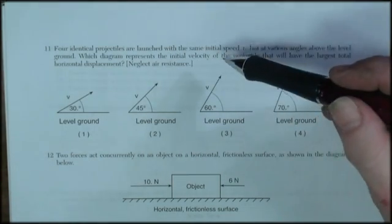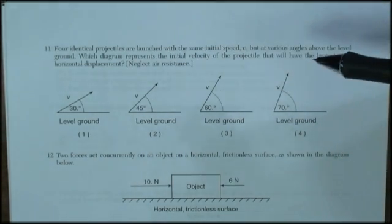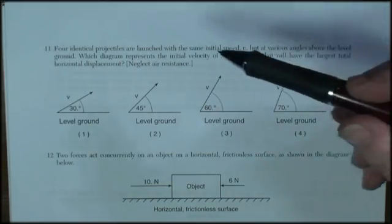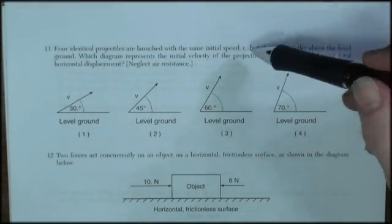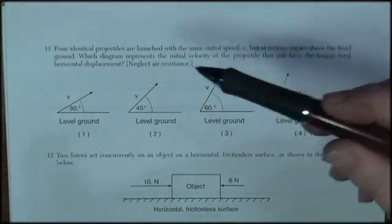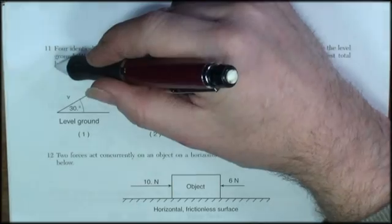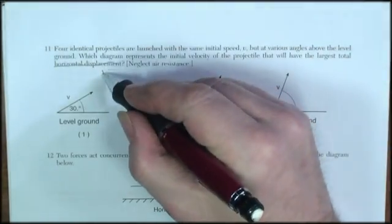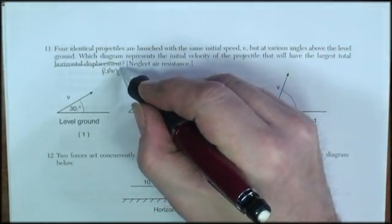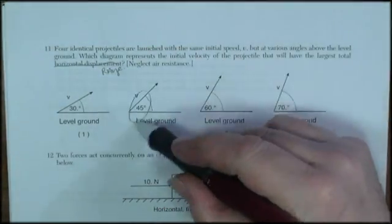Four identical projectiles are launched with the same initial velocity but at various angles. The diagram represents the initial velocity of the projectile that will have the largest total horizontal displacement, also known as range. And the correct answer is 45 degrees.